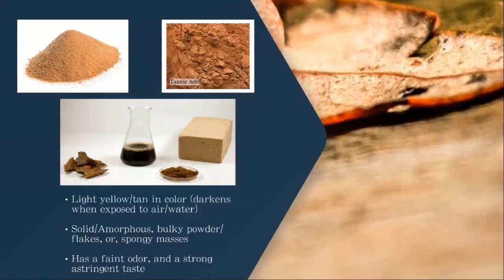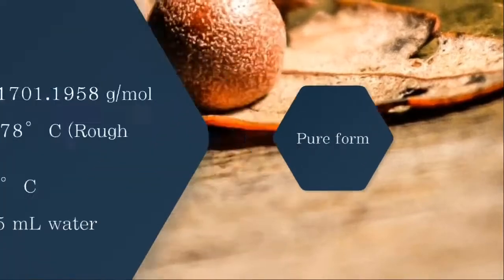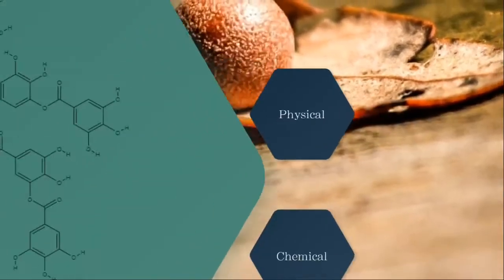In its pure form, tannic acid is light yellow — the tannic color — and it darkens when exposed to air or water, as you can see in the pictures above. It is an amorphous solid; it can be a bulky powder, a flaky powder, or spongy masses, as you can see in the bottom picture. It has a faint odor and a strong astringent taste.